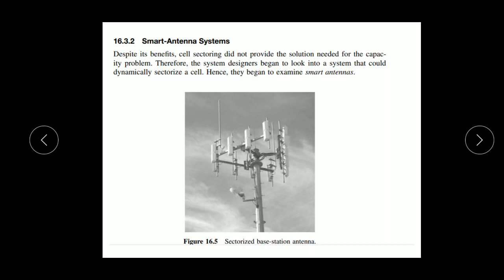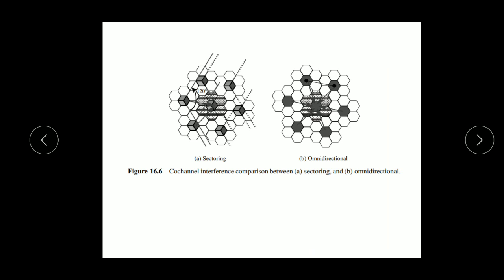Despite its benefits, cell sectoring did not provide the solution needed for the capacity problem. Therefore, system designers began to look into systems that could dynamically sectorize a cell. Hence they began to examine smart antenna systems. The omnidirectional pattern covers all directions, while the sectored system covers only 120 degrees on one side.